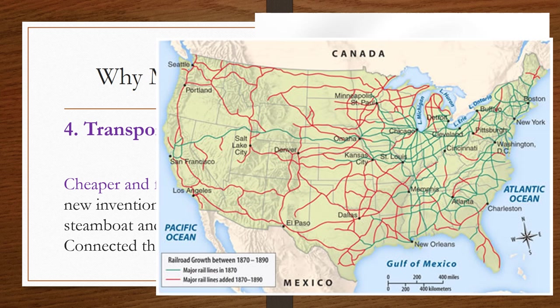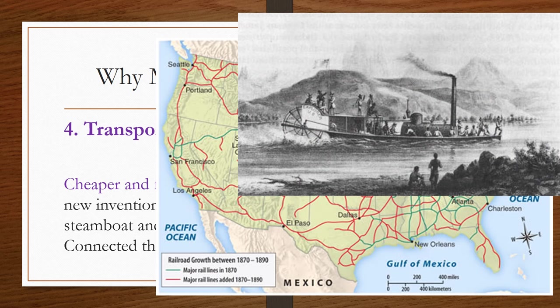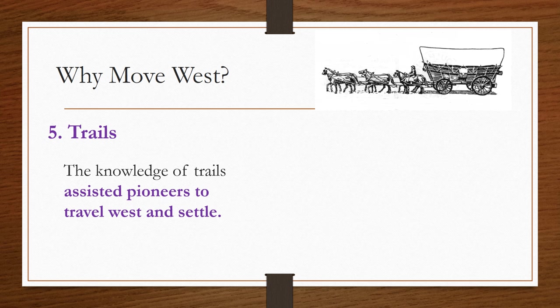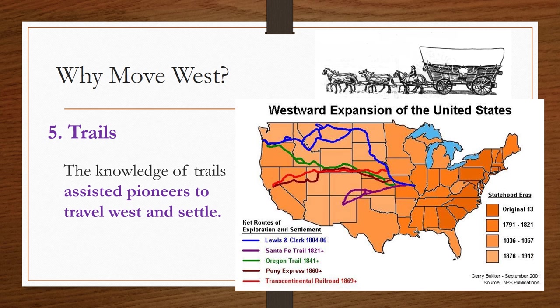Another invention was the steamboat, which provided fast and cheap transportation up and down the Mississippi River and other rivers, allowing people to use them as roads. Trails also began to be blazed — after Lewis and Clark headed west, trails were being established and people were following them regularly. They shared knowledge with each other about these trails, and sometimes hired experienced wagon train leaders to guide large groups of Conestoga wagons and homesteaders out west.